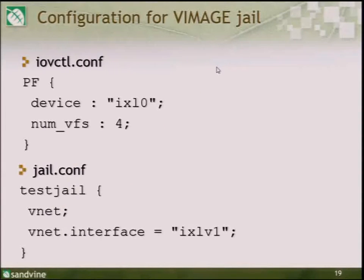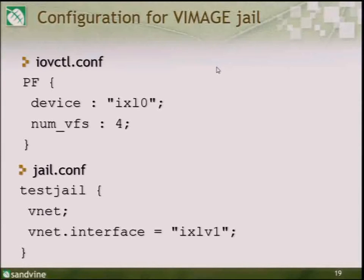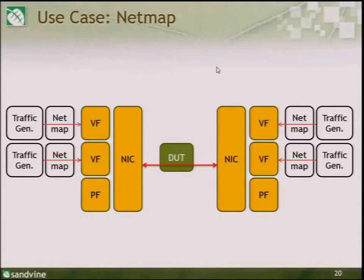To configure SR-IOV for jails, you set up the PF and optionally set VF-specific parameters. In jail.conf you enable VNet on the jail and set the interface to the virtual function interface. In this case you're not using PCI pass-through, so the VF shows up on the host — the act of starting the jail moves the interface into the jail's VNet.